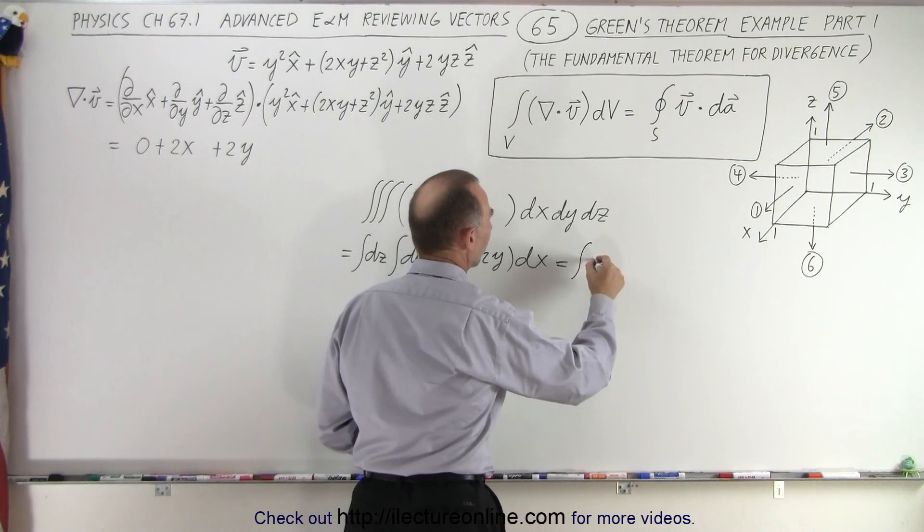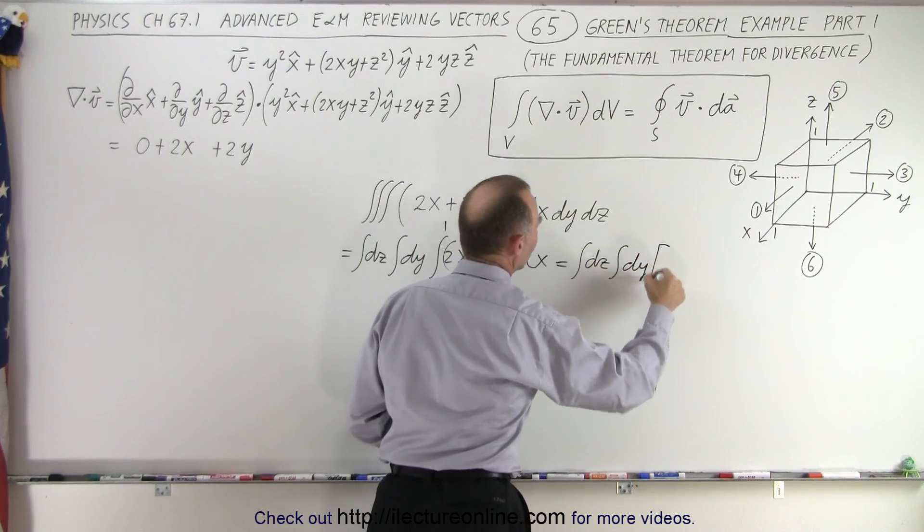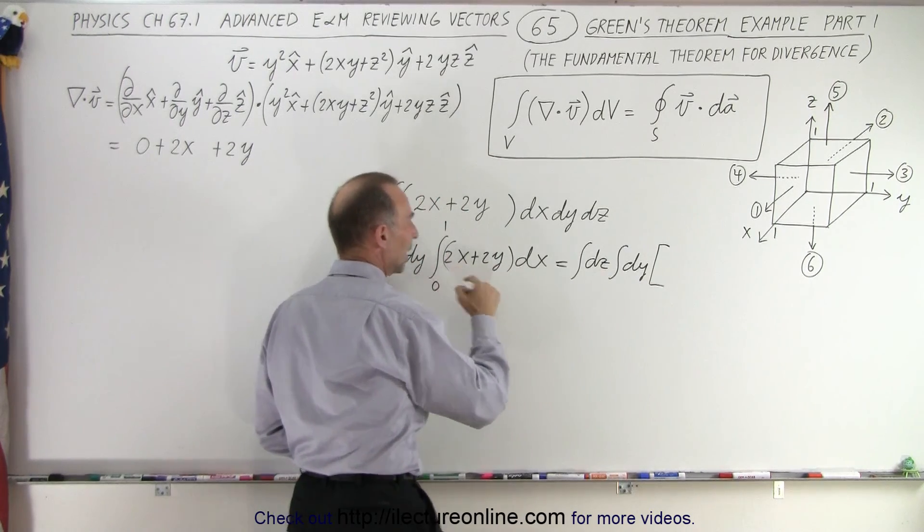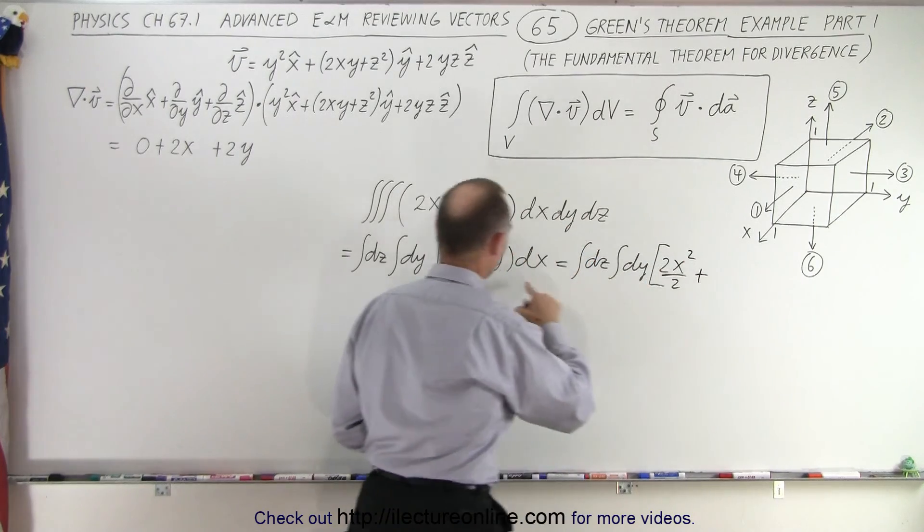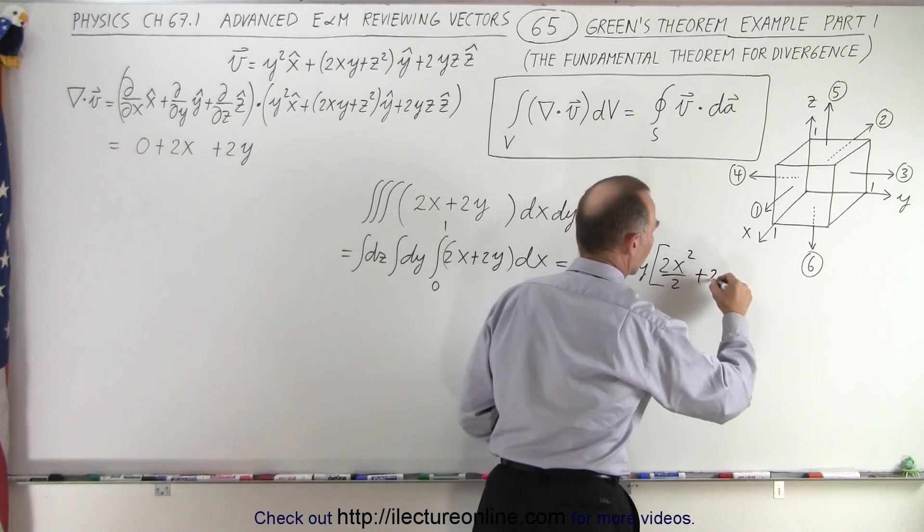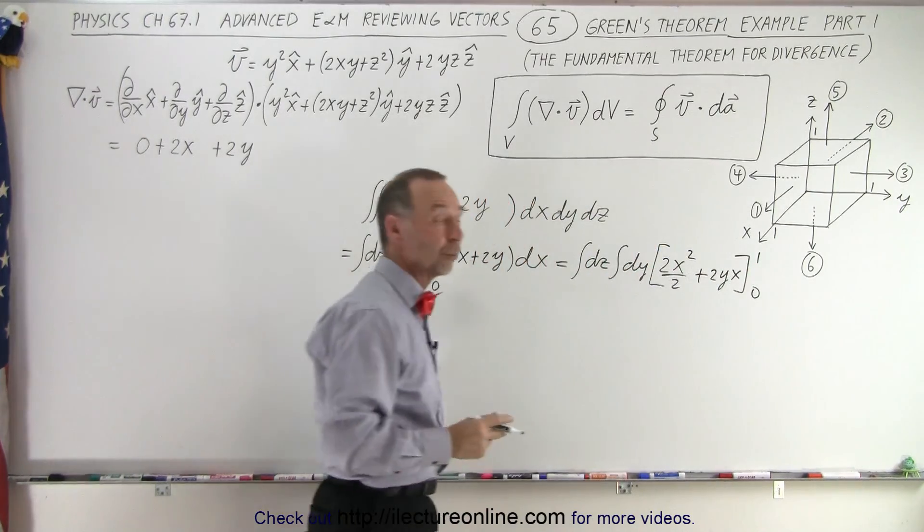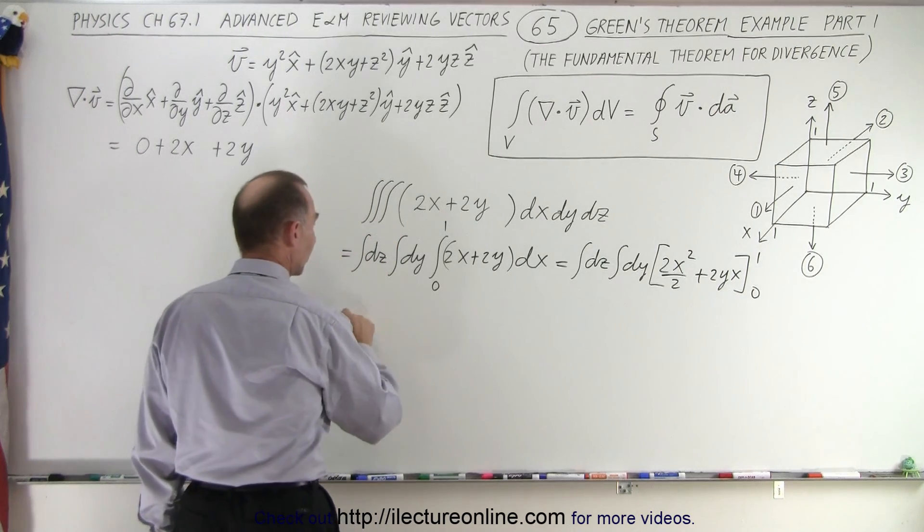So this will be the integral over dz times the integral over dy times, and when we integrate this against the x variable we get 2x squared over 2 plus here we get 2yx. And then we go from 0 to 1, so when we plug in the lower limit we get nothing, when we plug in the upper limit we get the following.